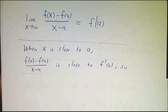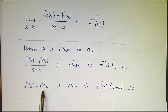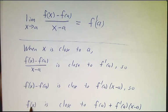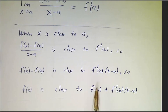So whenever x is close to a, this ratio is close to f'(a). So we can multiply both sides by x minus a and get that f(x) minus f(a) is very close to f'(a) times x minus a. And we can add f(a) to both sides and get that f(x) is very close to f(a) plus f'(a) times x minus a.